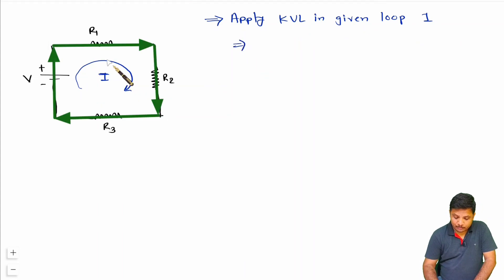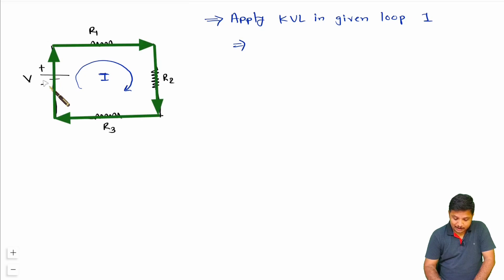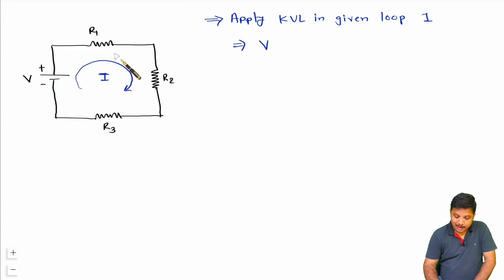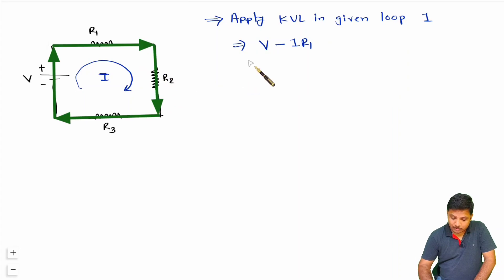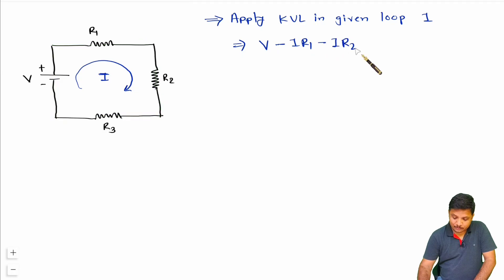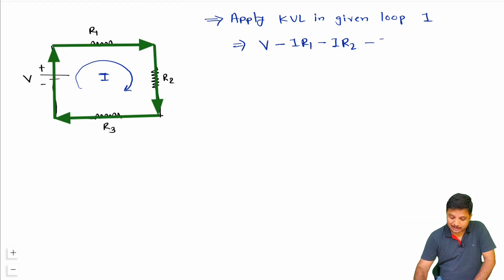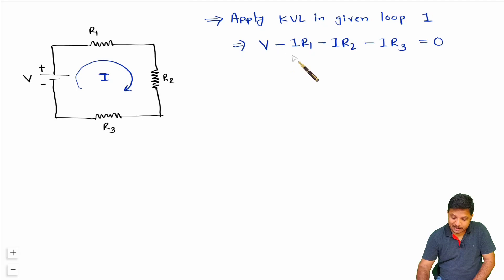When you apply KVL in this loop, the voltage source goes from minus to plus, so you consider that as plus V. The voltage drop across resistance R1 is I times R1, so that should be minus I times R1. Voltage drop across R2 is I times R2, so that is minus I times R2. Voltage drop across R3 is I times R3, so that is minus I times R3. The sum equals zero. This is how we apply KVL.